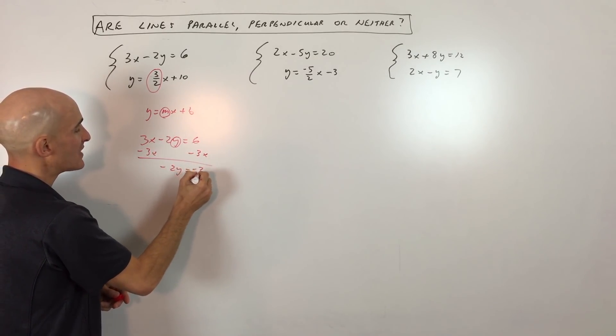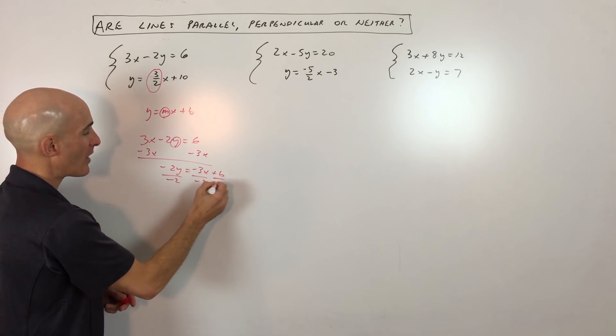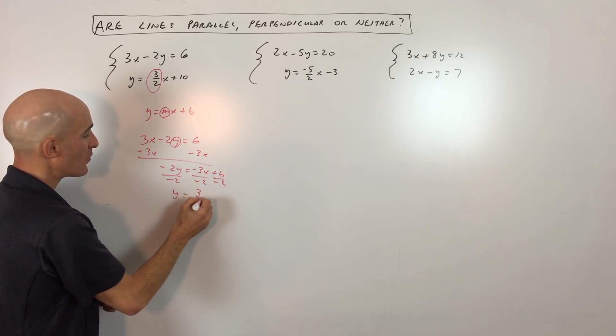So we have negative 2y equals negative 3x plus 6. We're going to divide everything by negative 2 because we want to get y by itself. And you can see we get y equals 3 halves x minus 3.